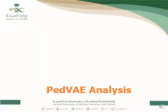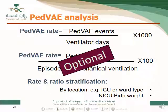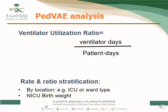For Pediatric VAE analysis, it is exactly similar to VAE for adults. You can calculate the rate based on 1,000 ventilator days or 100 episodes of mechanical ventilation. Using episodes of mechanical ventilation as the denominator is optional. Analysis can be stratified by ICU location. The ventilator utilization ratio is ventilator days over patient days, and can also be stratified by type of pediatric ICU.